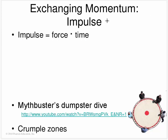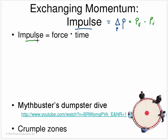How do we change momentum? We change momentum using an impulse. An impulse is defined as a change in momentum — that triangle symbol means 'change' — which can be written as momentum final minus momentum initial. Another definition of impulse is force multiplied by how long it acts for.